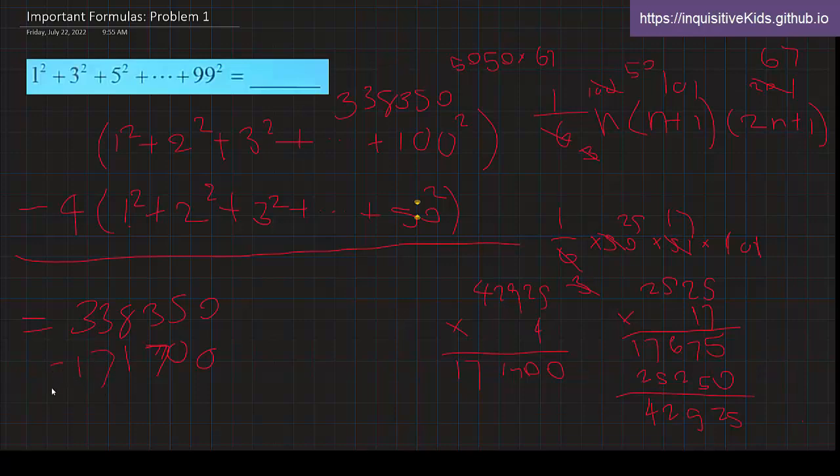This whole thing will then equal 338,350 minus 171,700. Alright, now we subtract. It should be pretty easy. Alright, so our final answer is 166,650. Thank you.